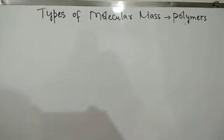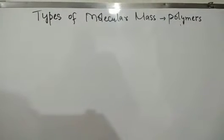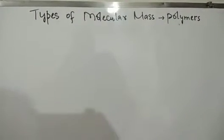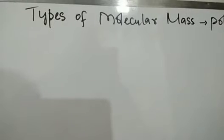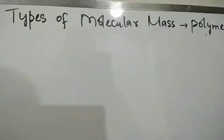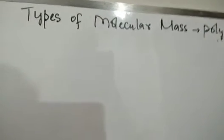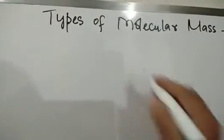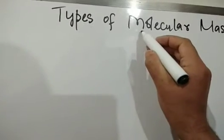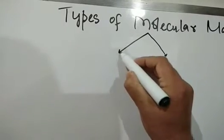Bismillah ar-Rahman ar-Rahim. So we are back with our topic, that is the molecular mass of polymers. Last lecture mein we discussed about the basics of the molecular mass in polymers. Now today we will discuss the types of molecular masses — how we express molecular mass in polymers. There are basically two methods for expressing the molecular mass in polymers.